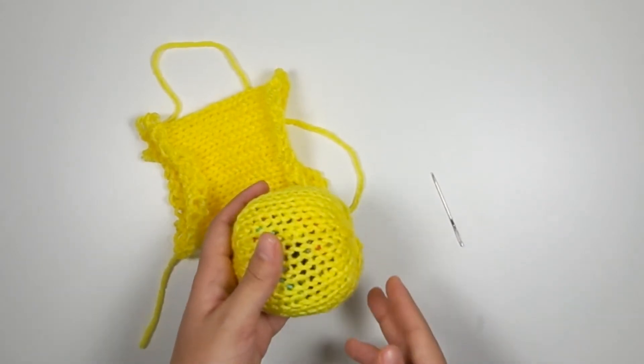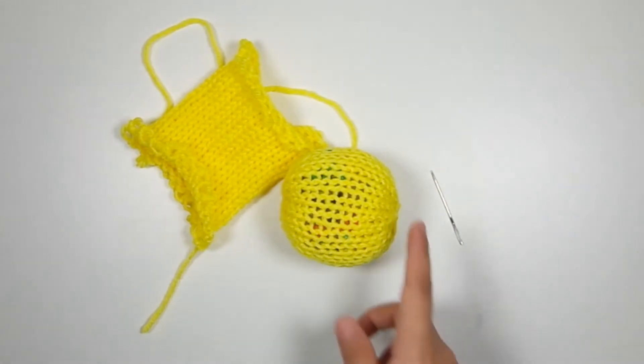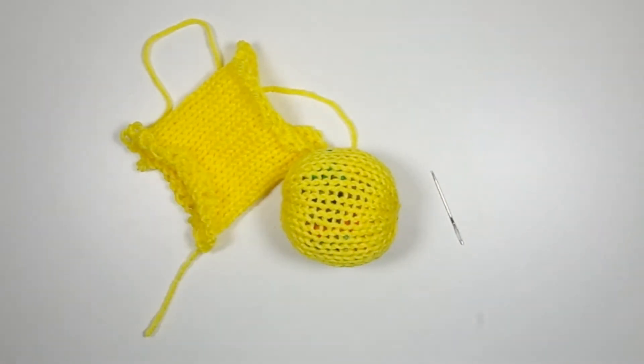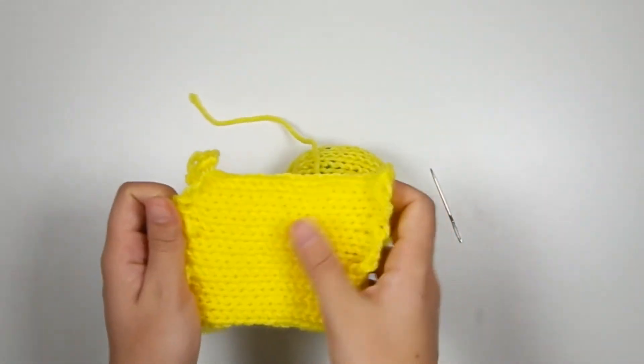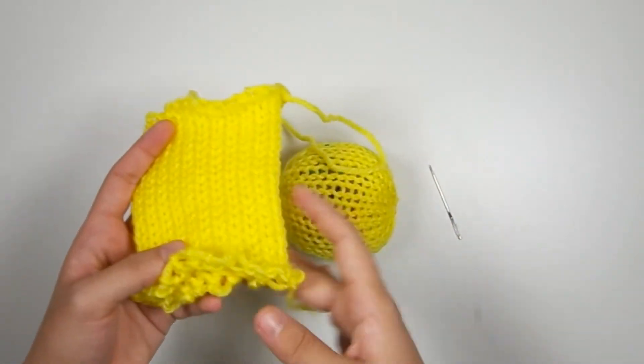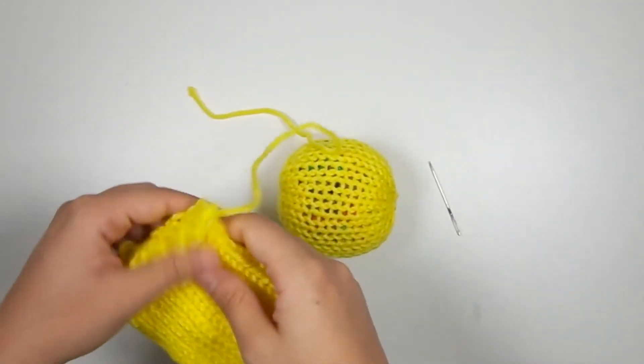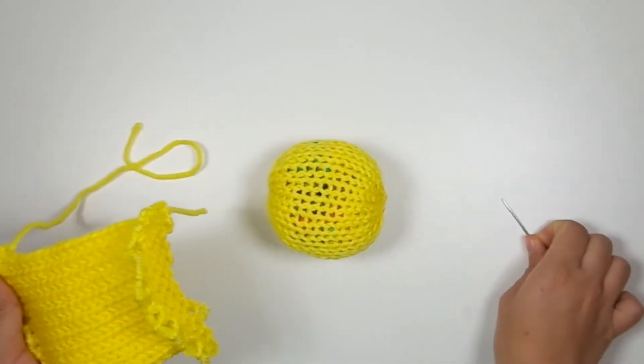And I used yarn scraps for the stuffing, and I've only so far covered it with one layer of knitting because this is going to be our second layer. So this is another tube on the Addy Pro, and it is 22 rows long, and I haven't done anything to it yet. I've just taken it off the machine, and now I'm going to show you how to turn this tube and this ball into a lemon.